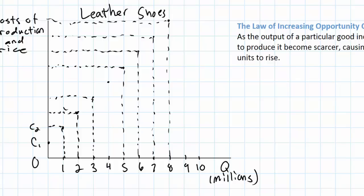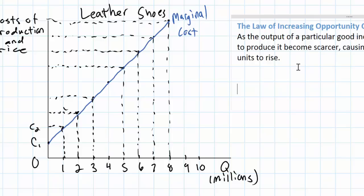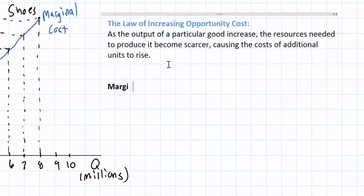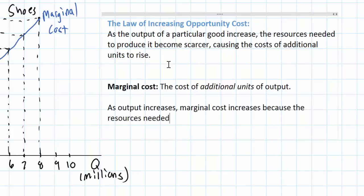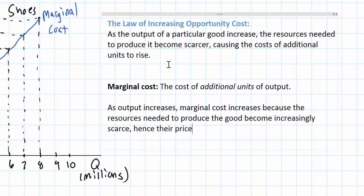As we can see here, what we end up with is what we call an increasing marginal cost curve. Marginal is another word for additional, so the marginal cost refers to the cost of additional units of a good to the producers of that good. The relationship between the quantity produced of a particular good and the marginal cost of producing that good is direct — as output increases, marginal cost increases because the resources needed to produce the good become increasingly scarce, and hence their prices rise.